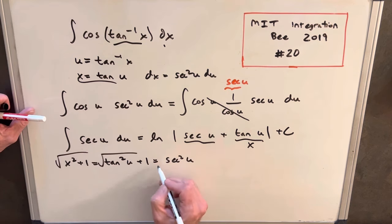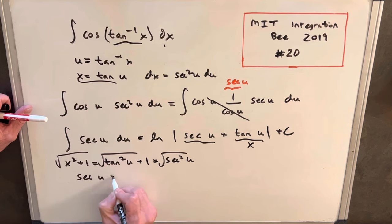So then if we take a square root, we notice that secant of u is just square root of x squared plus 1.